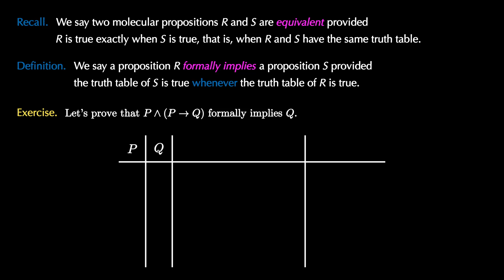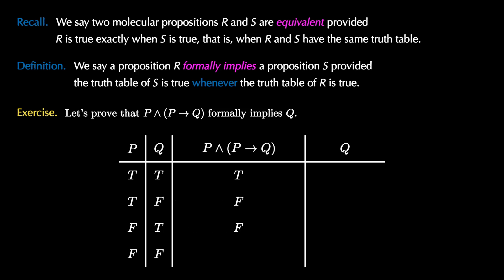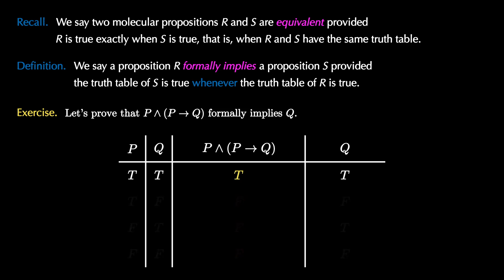To do this, we create a truth table with a column for P and a column for Q, and four rows for the four possible truth situations of P and Q together. The third column is for the proposition P and P implies Q, and the fourth column is for Q. We fill in the columns applying the truth tables for and and conditional. Notice that these two propositions are not equivalent — they differ in the third row. But to show that the first formally implies the second, we only look at rows where the first proposition is true, which is just the first row. There, the second proposition is also true. Therefore, P and P implies Q formally implies Q.